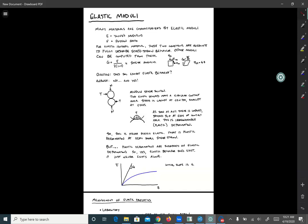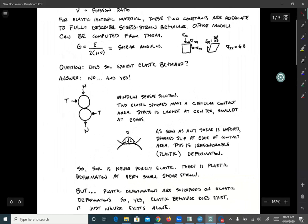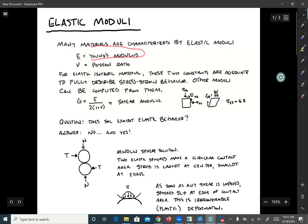Many materials are characterized by elastic moduli. Most commonly, we'll use the Young's modulus E and Poisson's ratio nu. If the material is elastic and isotropic, just those two material constants are adequate to fully characterize the stress-strain behavior of the soil. You can calculate other moduli from these.